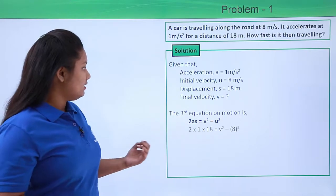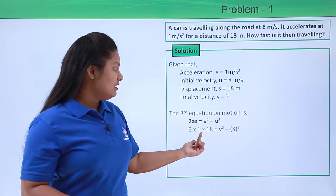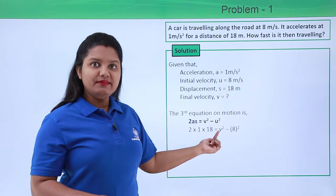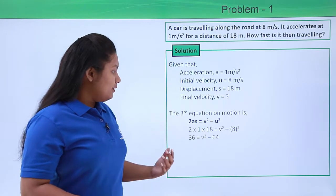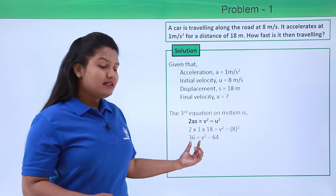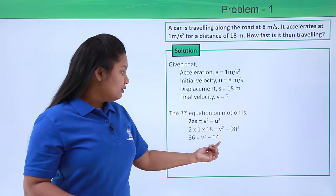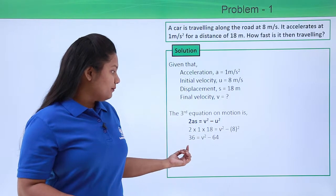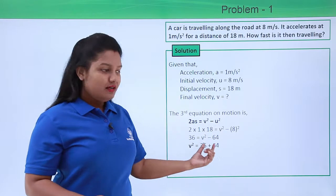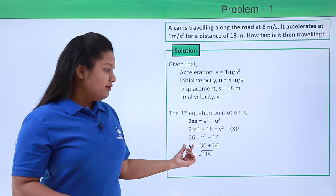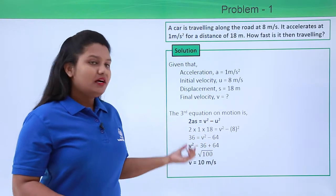On substituting these values, we get 2 × 1 × 18 equals v squared minus 8 squared. Now on evaluating this we get 36 equals v squared minus 64. We will take the 64 to this side, and on doing that we have v squared equals 36 plus 64, which is 100. Now to find v, we need to take the square root of 100, which is 10.